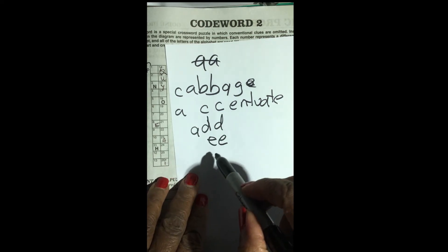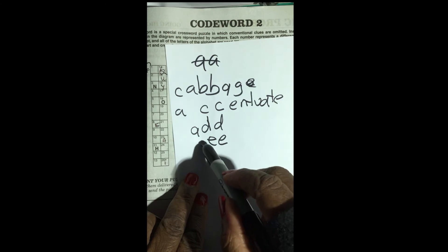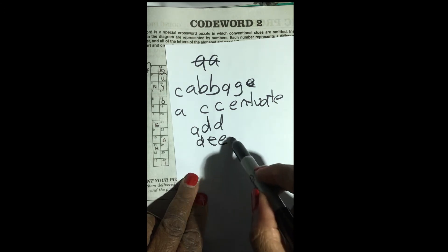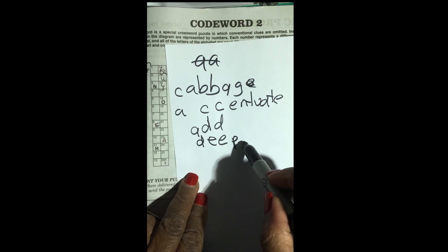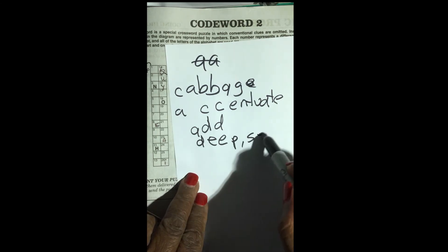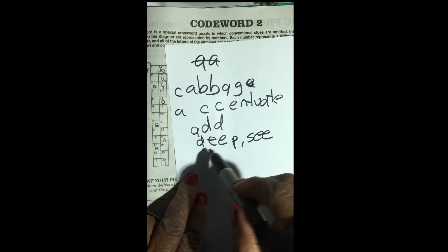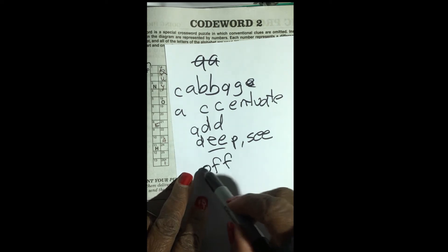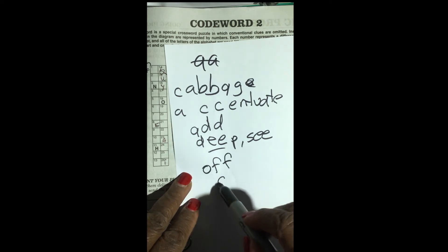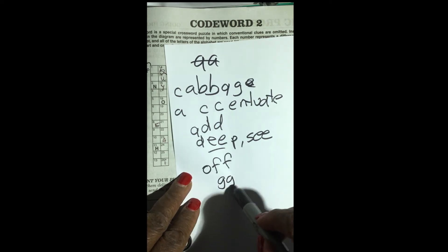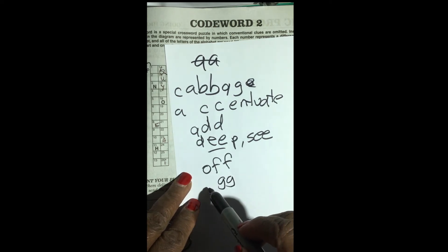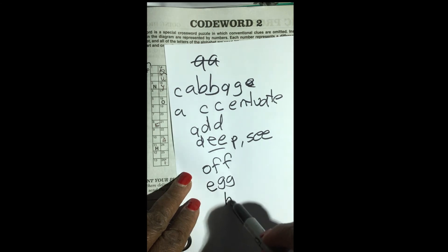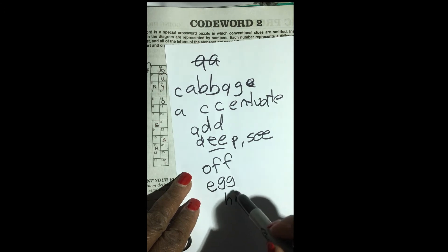E, E — oh wow, there are so many words with double E. F, F — of course, like off. G, G — like egg.